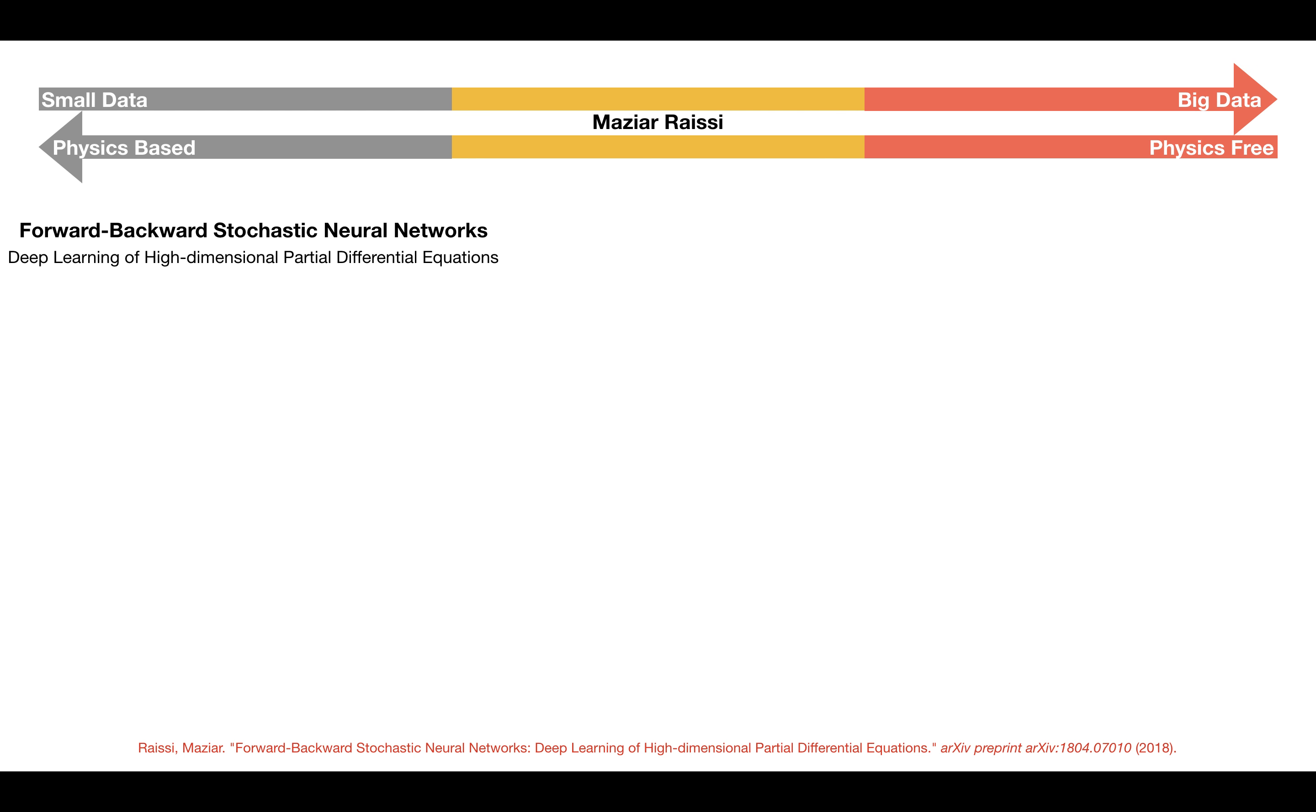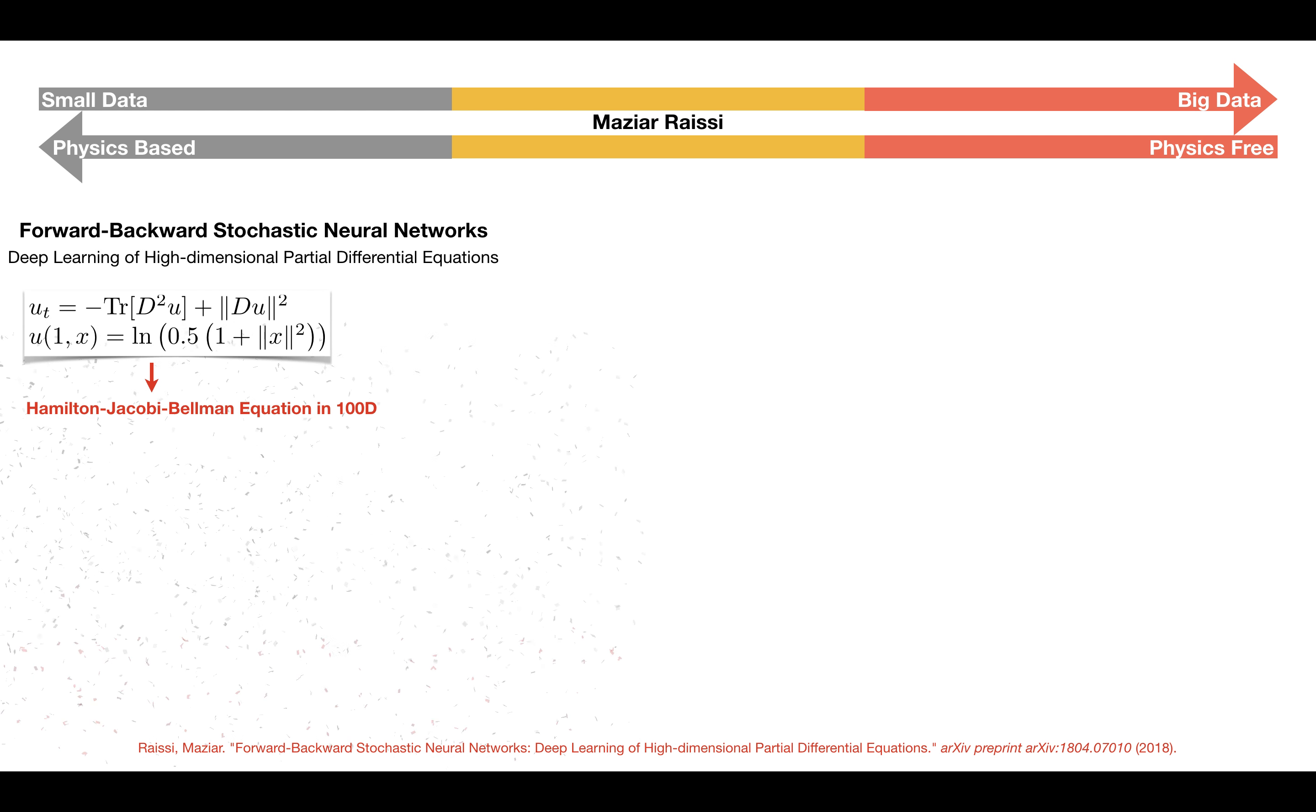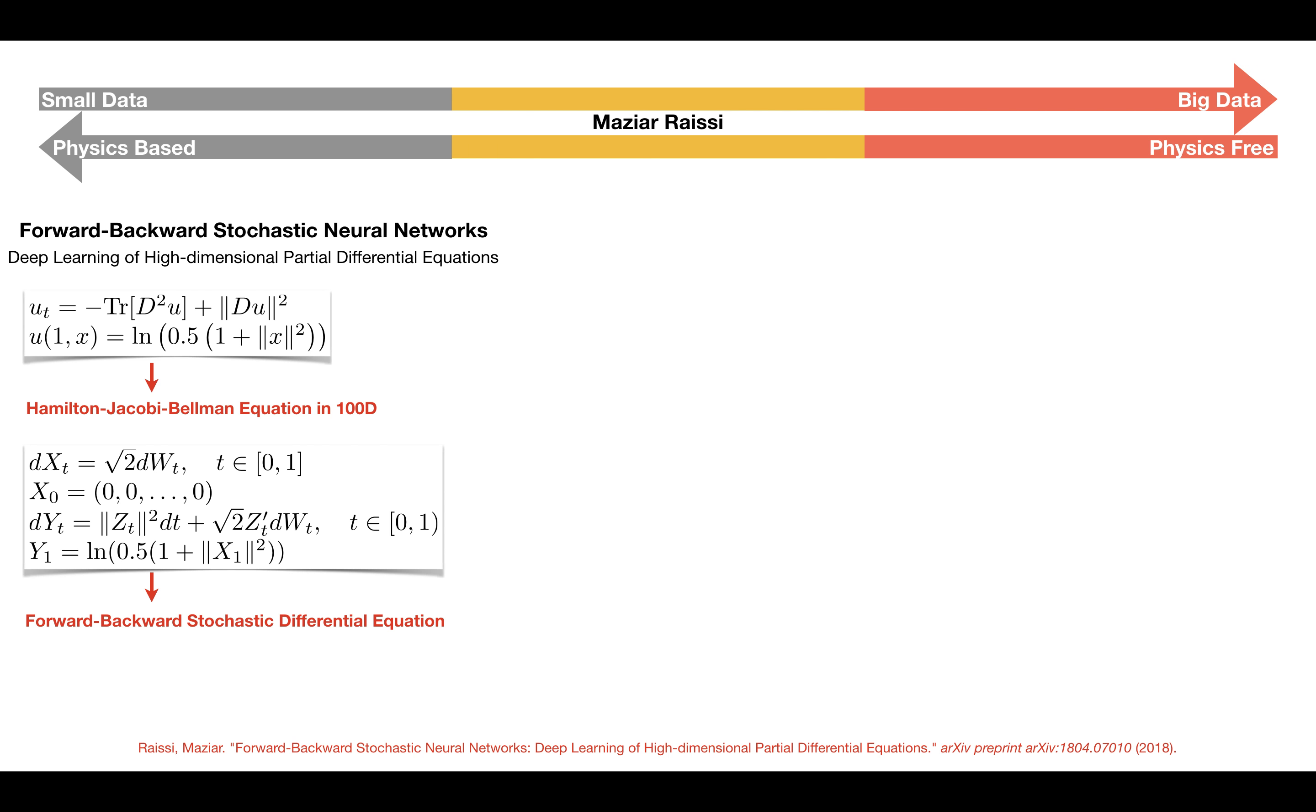Let us now consider the following 100-dimensional Hamilton-Jacobi-Bellman equation. This equation corresponds to the following forward-backward stochastic differential equations. The Hamilton-Jacobi-Bellman equation admits the following explicit solution, which we will use to test the accuracy of the proposed framework.